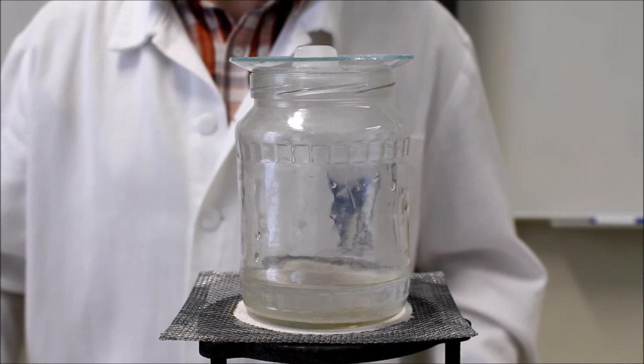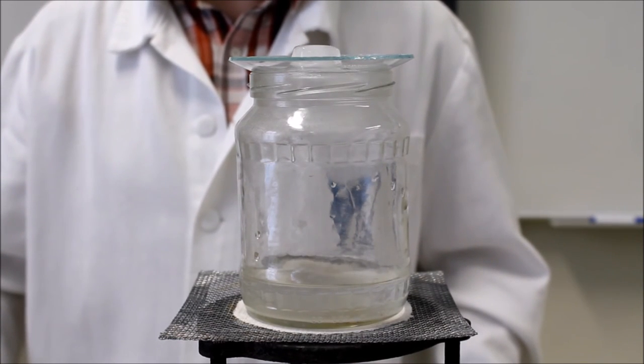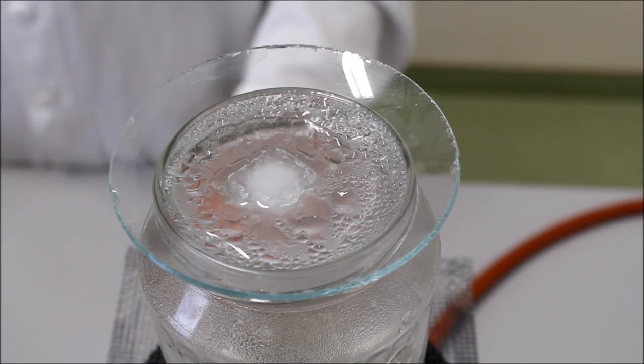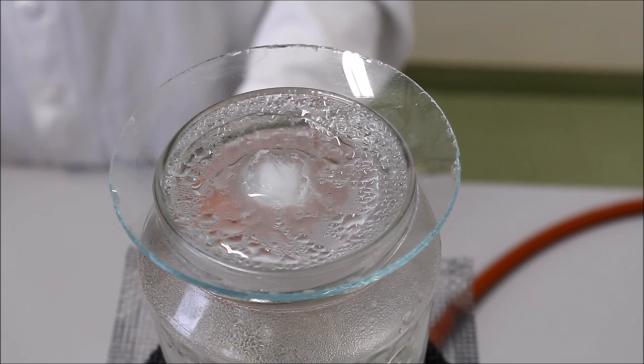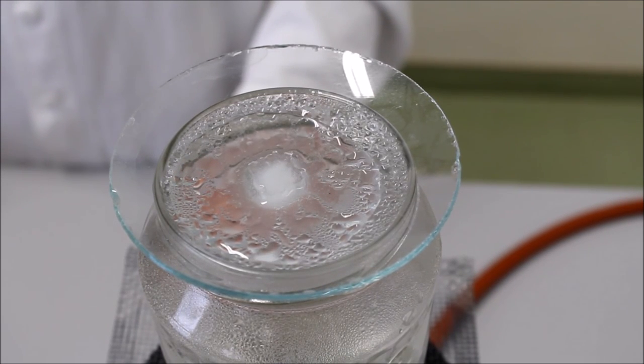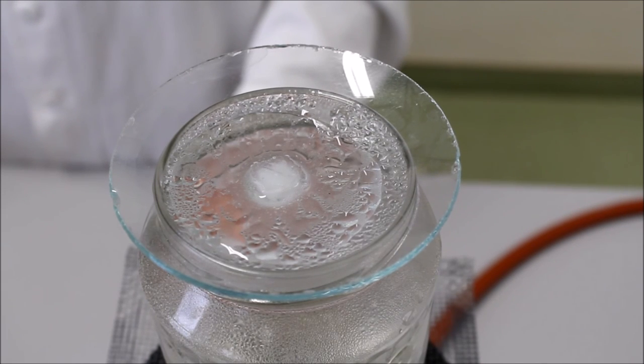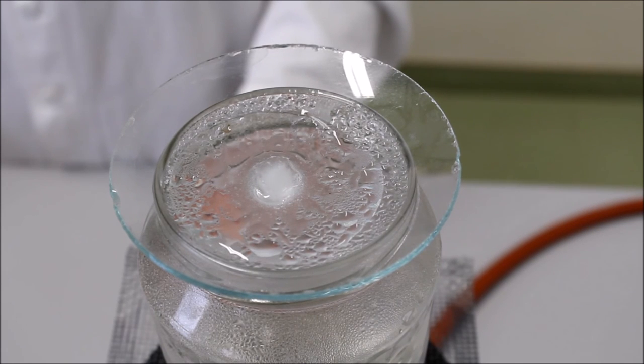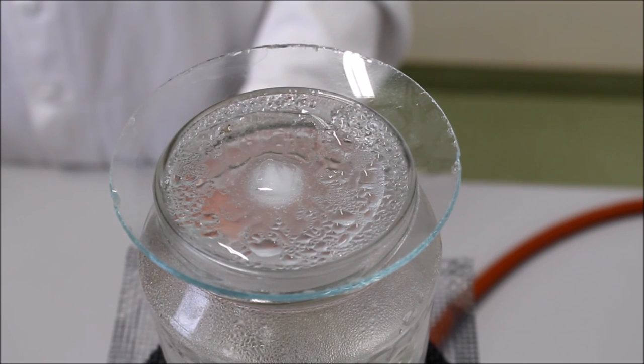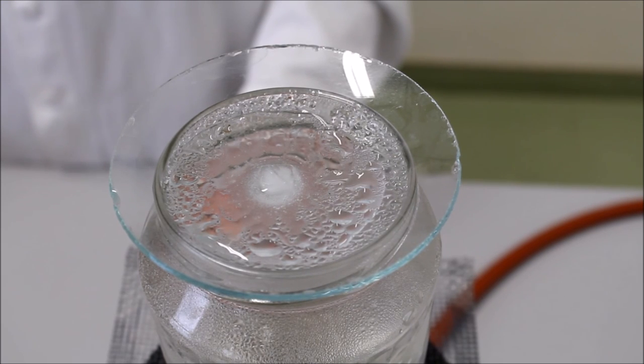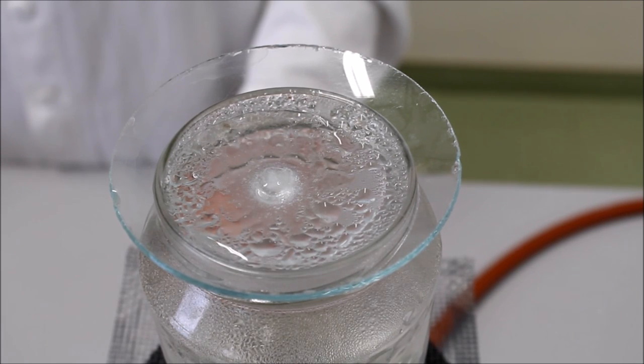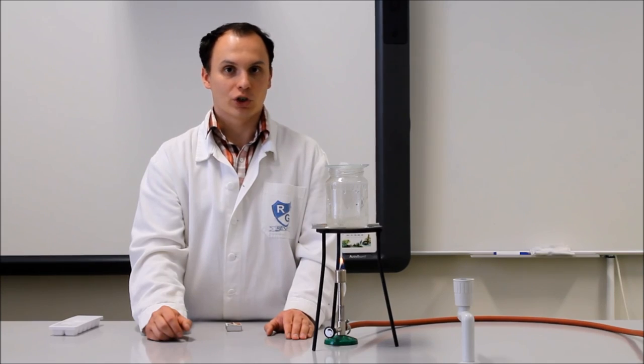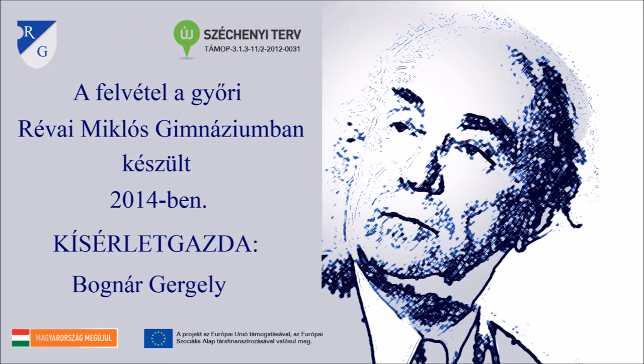A csapadék képződés, az eső létrejött ebben a kis befőttös üvegben. Felülről az óraüvegre pillantva gyönyörűen látszik, hogy a meleg párás levegő lehűlve kicsapódik, azaz a víz kicsapódott az óraüvegen, és apró pici vízcseppek jelentek meg. Ezek a vízcseppek fognak majd eső formájában lecsöppenni a befőttös üvegben. Köszönöm a figyelmet, próbáljátok meg otthon is elvégezni.